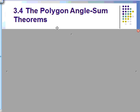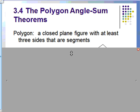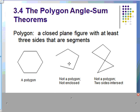Before we begin going over what these theorems are, we're going to talk a little bit about what polygons are. The official definition of a polygon is a closed plane figure with at least three sides that are segments. For example, this would be a polygon, this would not be a polygon because it is not enclosed, and this last one would not be a polygon because these two sides intersect, and you cannot have two sides that intersect in a polygon.